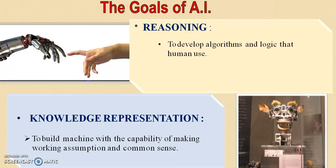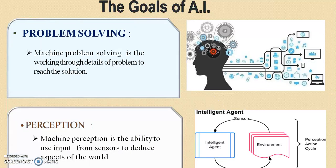The next goal is knowledge representation. If the machine has the capability of decision-making and is able to represent its knowledge when a particular situation occurs, then we can say that the machine has the capability of knowledge representation.